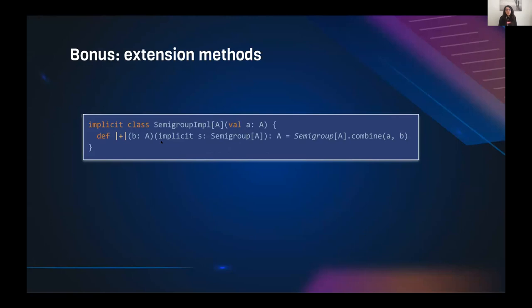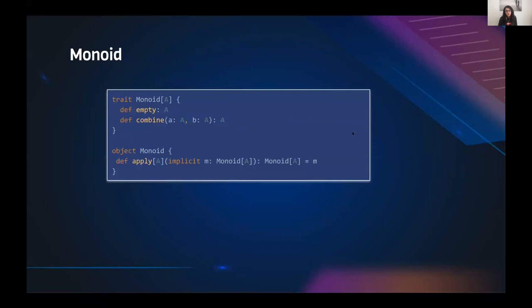If we want to use '+' on Team instead of calling 'SemiGroup[Team].combine(team1, team2)', we can use extension methods — defining an extension that requires A to be a SemiGroup so we can call combine directly.